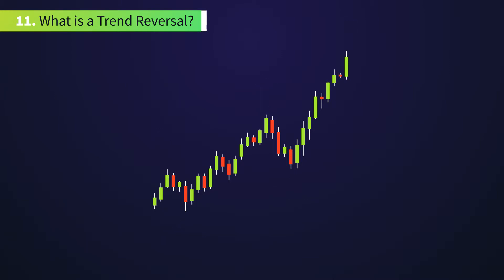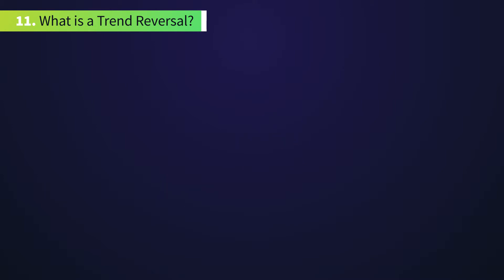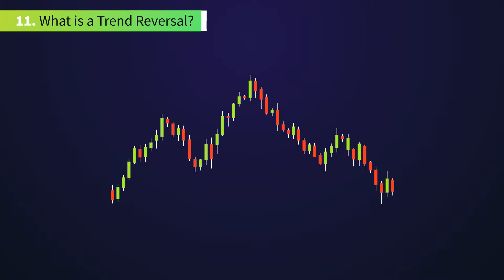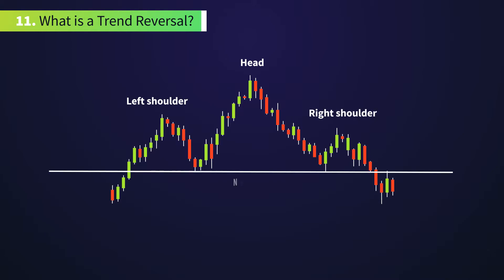Let's look at an example of a popular reversal. The head and shoulders reversal is formed at the end of an uptrend. The highest top is the head, the top to the left of the head is the left shoulder, and on the right is the right shoulder. The line that connects the last two bottoms is known as the neckline, which acts as support.